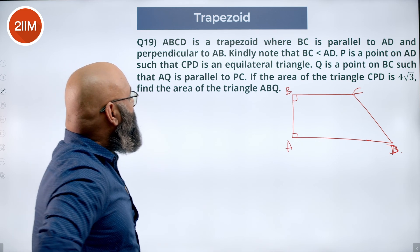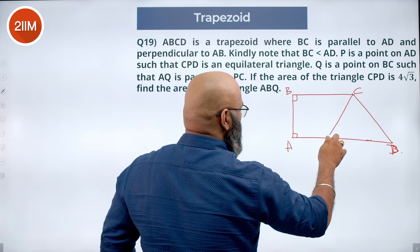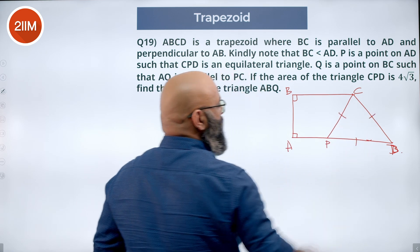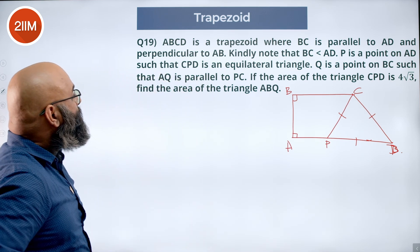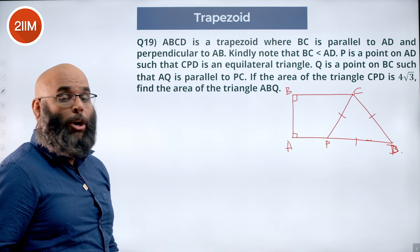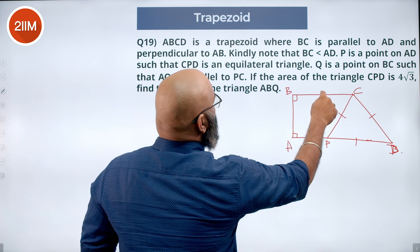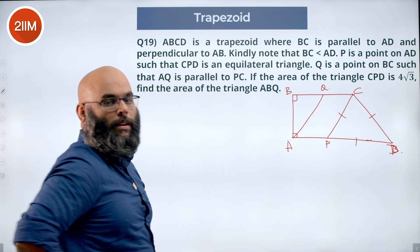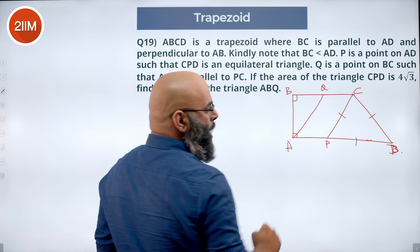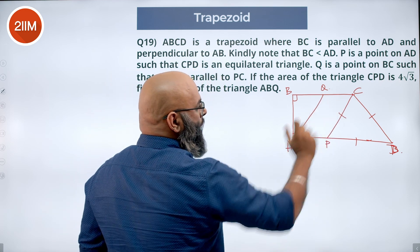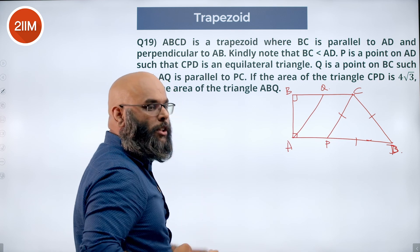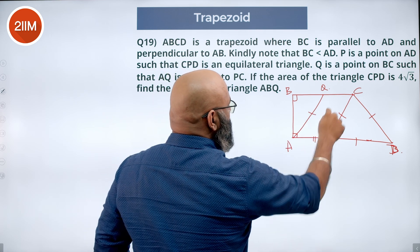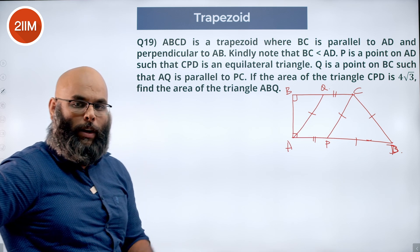P is a point on AD such that CPD is an equilateral triangle, so all three sides are equal. Q is a point on BC such that AQ is parallel to PC. We have point Q on BC, connect AQ, which is parallel to PC. Since QC is parallel to AP and AQ is parallel to PC, we clearly have a parallelogram — two sets of parallel lines intersecting. So opposite sides are equal, meaning CP and AQ are equal in length.